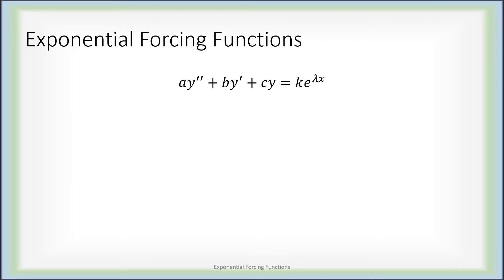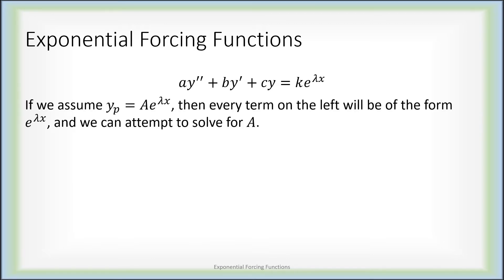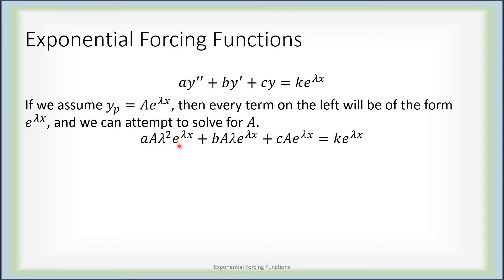Here is the equation we want to find a particular solution to. Since derivatives of e to the lambda x are going to be other multiples of e to the lambda x, let's just assume that our particular solution is also some multiple of e to the lambda x, and attempt to solve for what that multiple is. The second derivative is just a lambda squared e to the lambda x, and the first derivative is just a lambda e to the lambda x. So we end up being able to cancel out e to the lambda x from everything, and we can factor a capital A out on the left, because capital A is actually the only thing we're trying to solve for here.